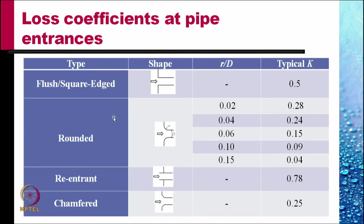We give here the head loss coefficients k for the various pipe fittings. In this first slide, we talk of the pipe entrances. If I have a flush or a square edged entrance as shown here, the typical value of k is 0.5.